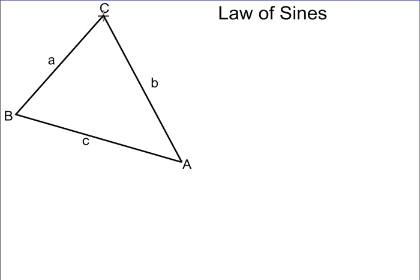what we're going to do is drop an altitude down from C to the opposite side so that it makes a 90 degree right angle with side C. So I have a right angle here and here.